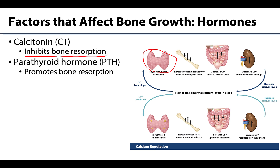Parathyroid hormone (PTH) is secreted by the parathyroid glands, located just posterior to the thyroid gland — you can see the posterior view here. PTH has the opposite effect of calcitonin: it promotes bone resorption by osteoclasts, allowing calcium to be released into the blood, and increases calcium uptake in organs such as the intestines. PTH will also promote the formation of calcitriol. The balance between calcitonin and PTH is delicate but very important in calcium homeostasis.